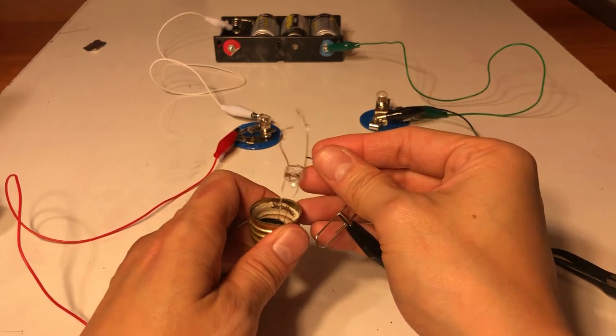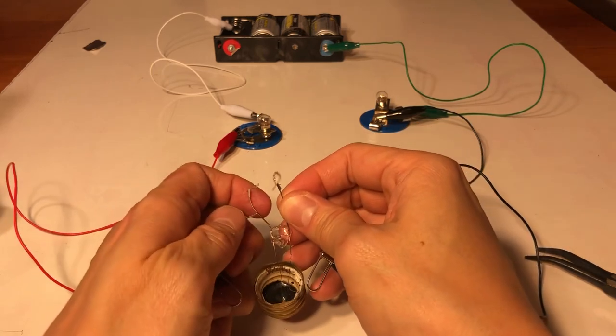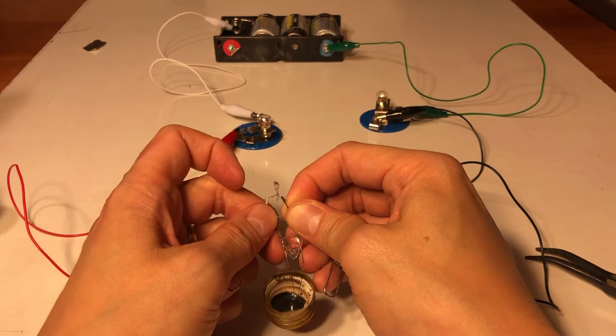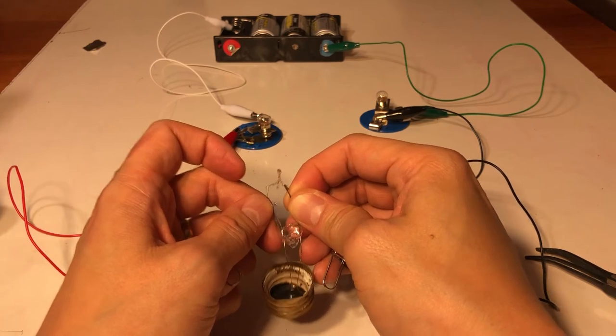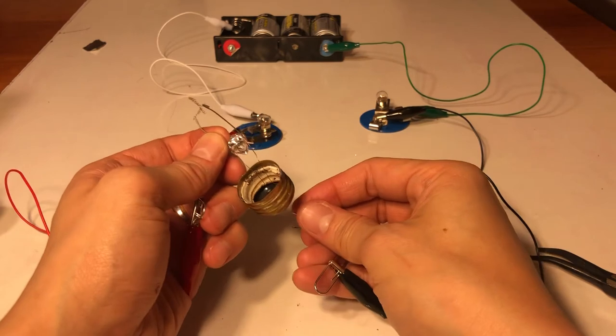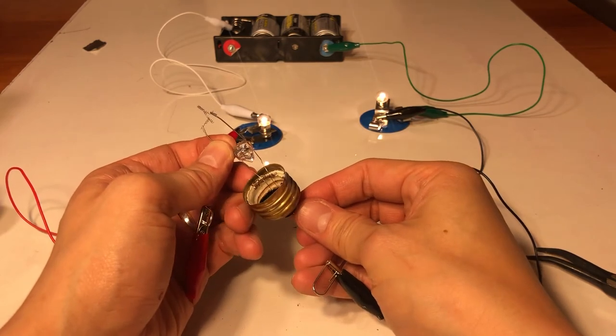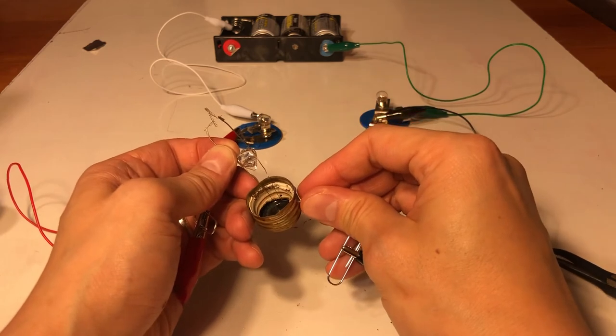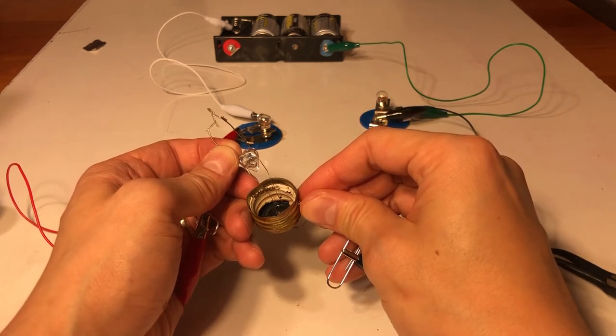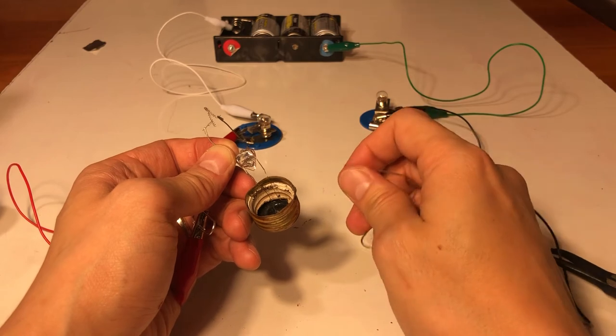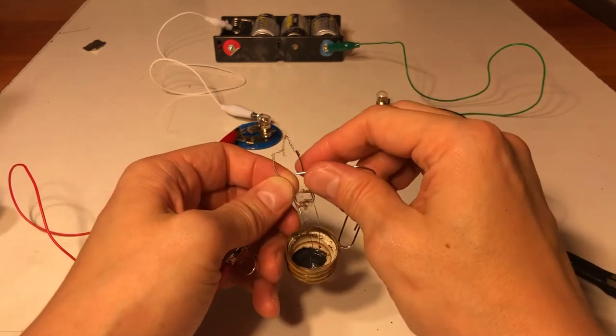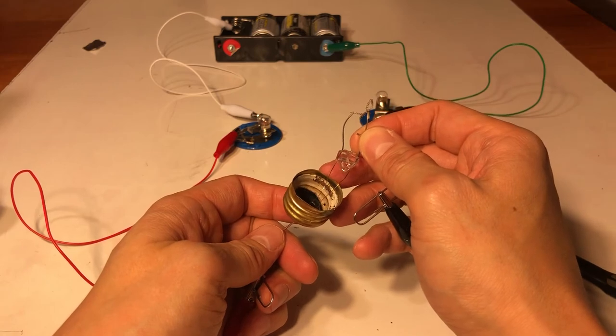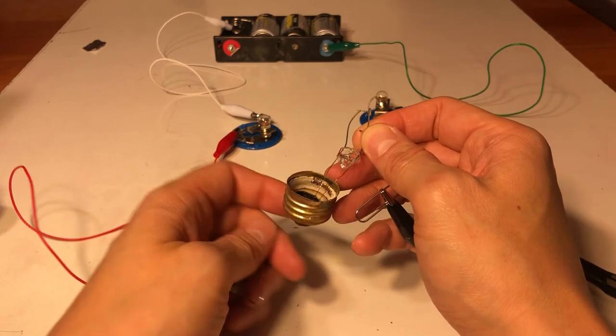So one more time. Support to support, you get nothing unless you touch things together with the filament. Left support to the tip. Left support to the threaded section. Oh that's different, right? Right support to the tip. Right support to the threaded section.